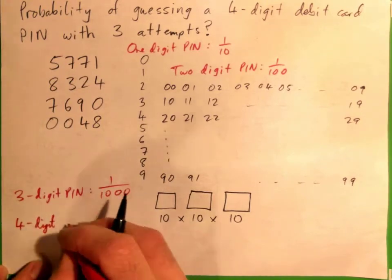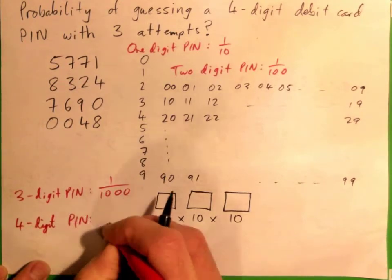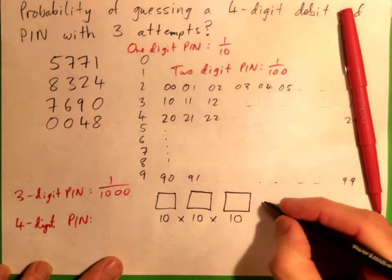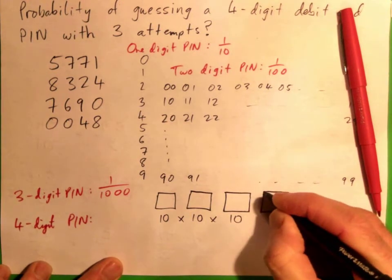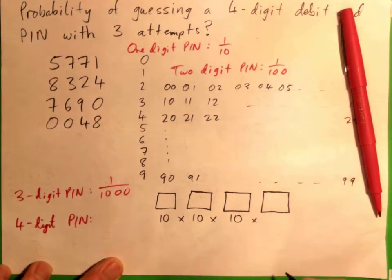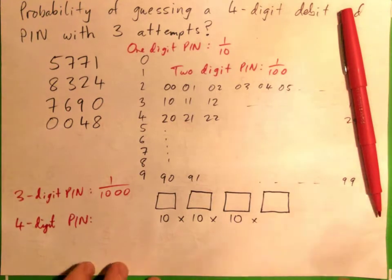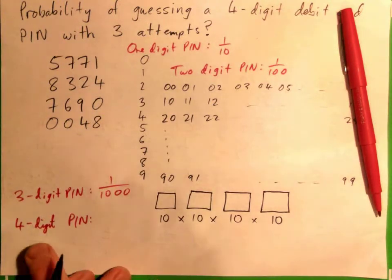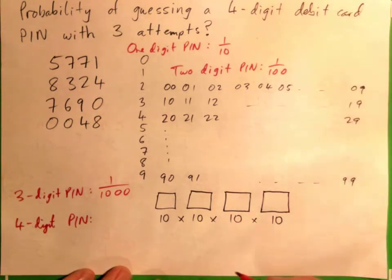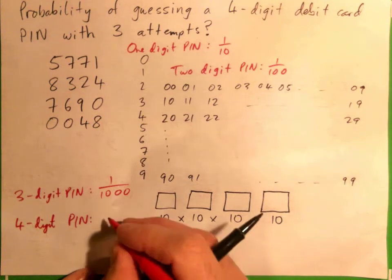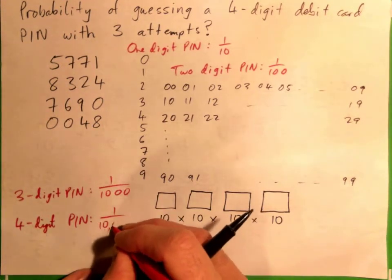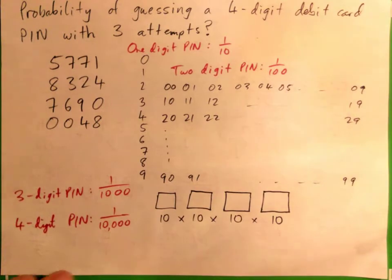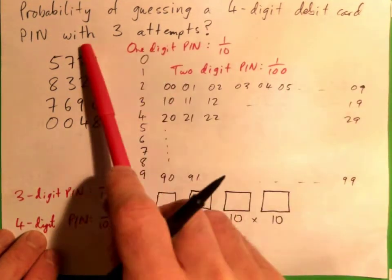Now for a four-digit PIN, there are four digits, each of which could be zero through nine. So how many ways are there of making a four-digit PIN? Ten thousand. And what's the probability of guessing a four-digit PIN with one guess? One out of ten thousand.